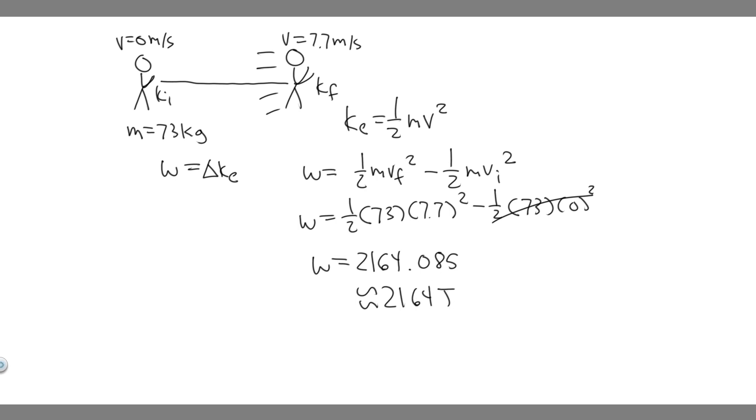Keep in mind we measure work in joules. So 2,164 joules—that's how much work is required to go from 0 to 7.7 meters per second. This is your answer, and hopefully you found this useful.